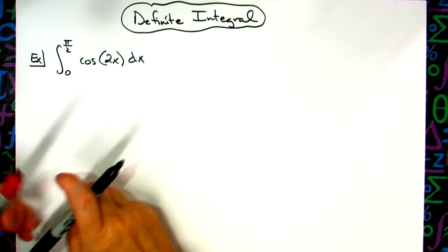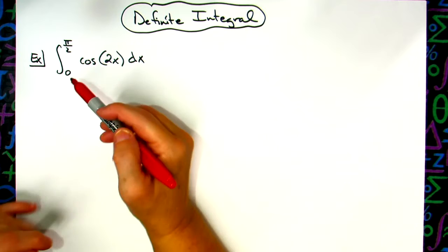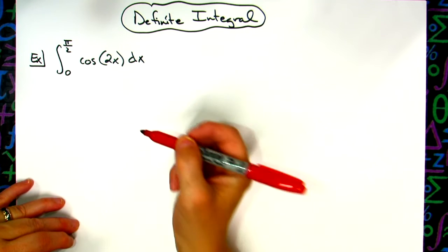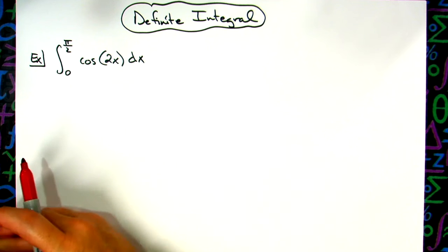In this video, we're going to take a look at a definite integral. We're going to integrate from zero to pi over two of cosine 2x dx. This is going to be a typical u-substitution.